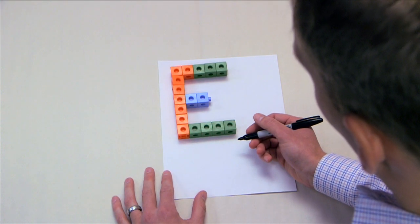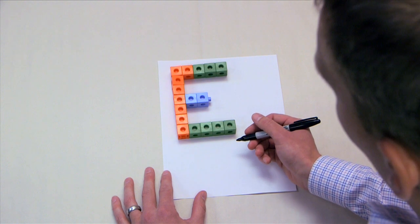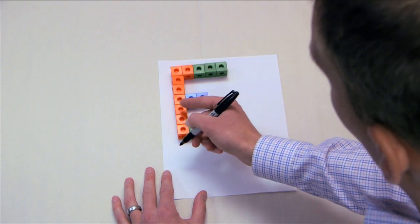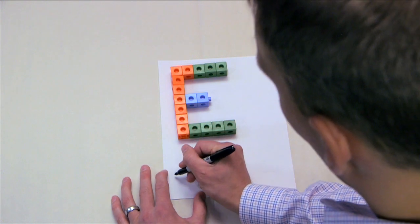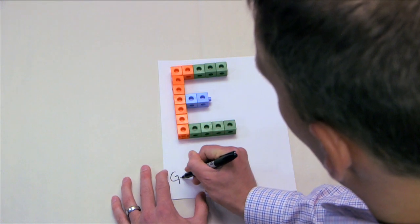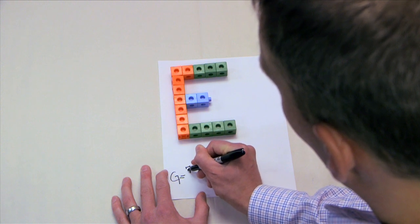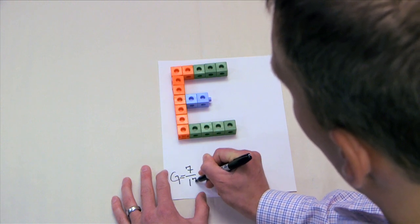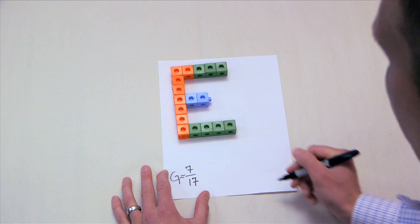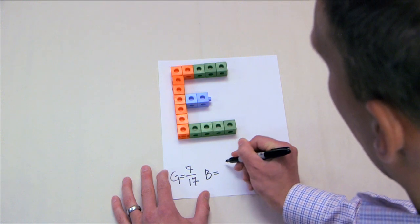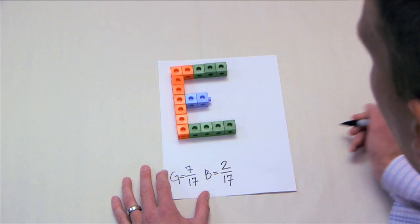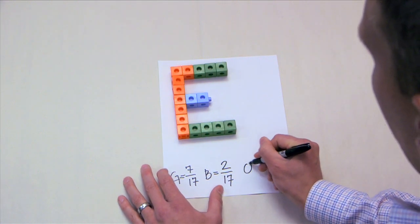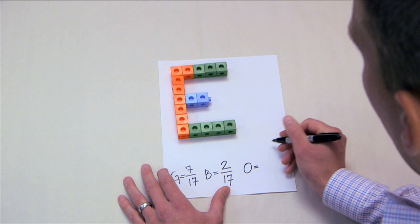In this example, the letter E is made up of 17 connecting cubes. The fraction of green cubes would then be seven-seventeenths. The blue cubes would be two-seventeenths, and the fraction of orange cubes would be eight-seventeenths.